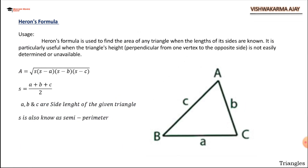Let's see the usage of Heron's formula. Heron's formula is used to find the area of any triangle when the lengths of its sides are known. It is particularly useful when the triangle's height — that is, the perpendicular from the vertex to the opposite side — is not easily determined or not available.